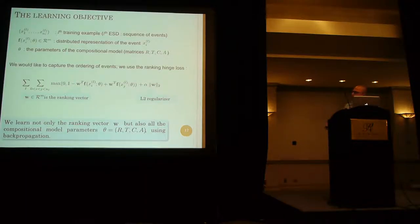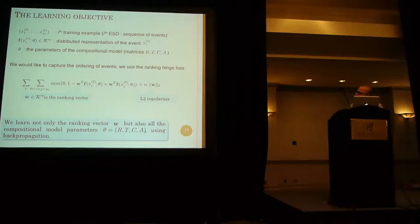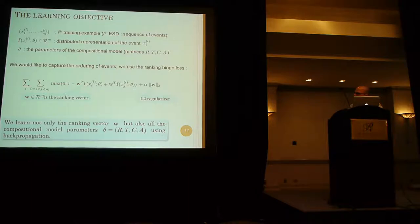So here you can see the learning objective. We have the sequence of events for a particular ESD and the parameters that you saw in the model, and we want to optimize this ranking hinge loss function. We then backpropagate the error to update the parameters.